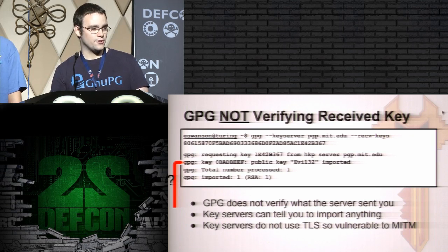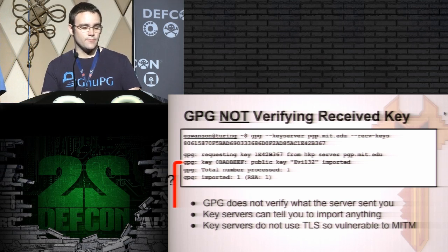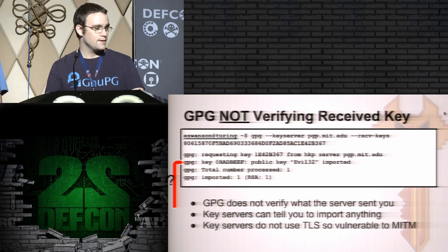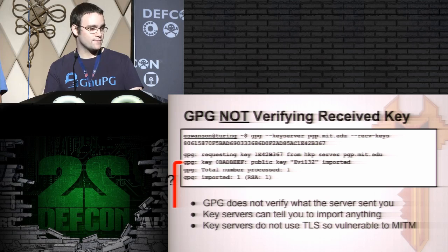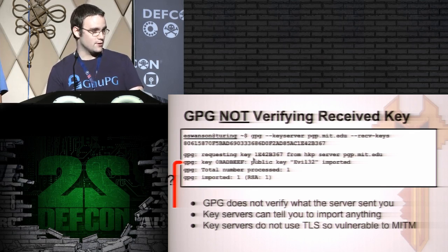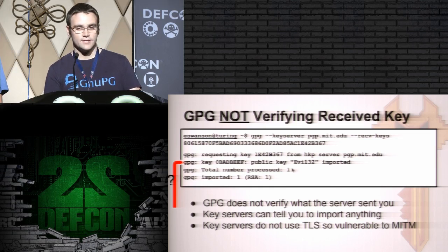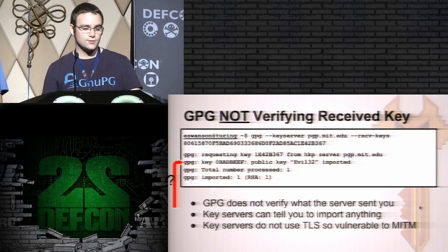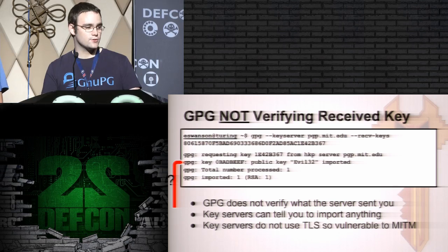More worryingly, GPG doesn't even verify that the received key matches the one you asked for. So if you ask for the full fingerprint, but there's a man-in-the-middle attack — in this case, a server impersonating PGP.MIT.edu — it returns the 0BADBEEF key. Clearly that doesn't match the fingerprint we asked for, but GPG gives no warning and this key ends up in your key ring. Since GPG doesn't verify anything, the key servers can tell you to import anything they want. And since the key servers don't use transport level security, they're vulnerable to man-in-the-middle attacks.